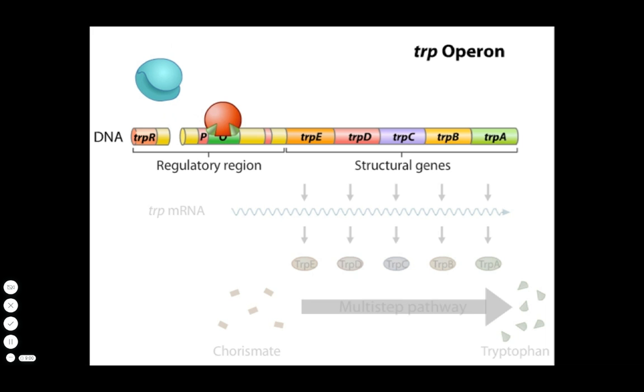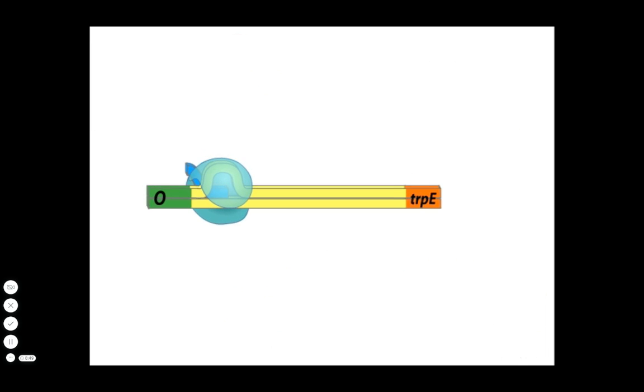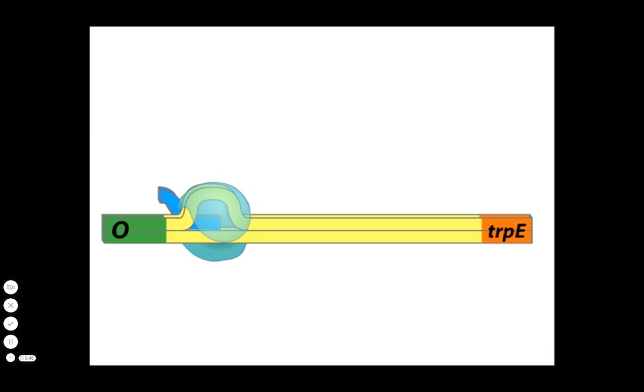However, even under conditions of high tryptophan, occasionally RNA polymerase will be able to access the operon and begin to transcribe the coding regions. As a second means of regulating the trp operon, E. coli uses a mechanism called transcriptional attenuation.